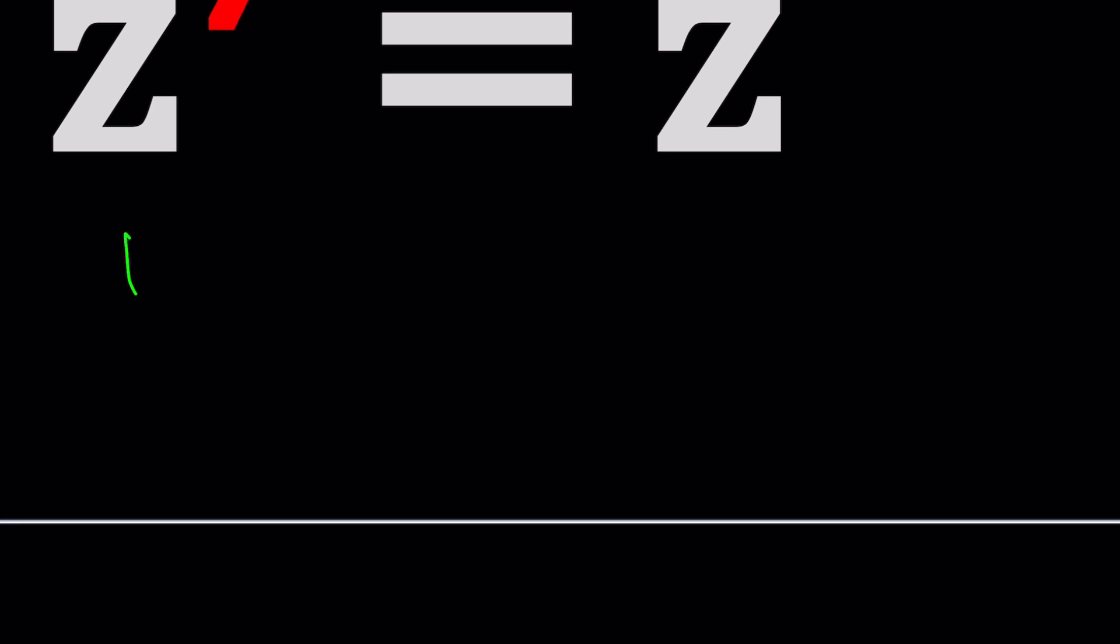So we have z to the seventh power equals z. First method: we're going to use the polar form. A lot of times I do problems without using the polar form and my audience says hey, why don't you use the polar form, it's a lot easier. I totally agree, but sometimes I forget. We're going to replace z with its polar form.